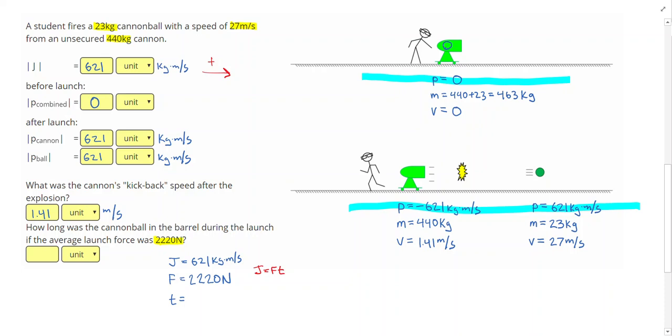I can now take that and divide it by the force to get the time. J equals FT can rearrange dividing both sides by force. The impulse divided by force equals time. So 621 divided by 2220 gives me 0.280 seconds. Make sure you keep at least three sig figs. If you were curious about the units, remember that kilogram meters per second is the same thing as newtons times seconds.